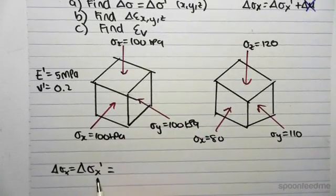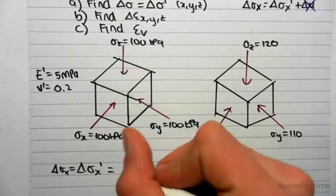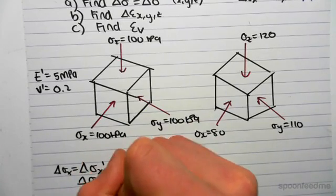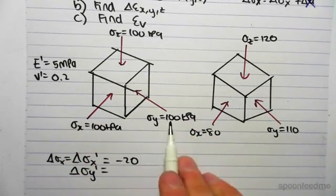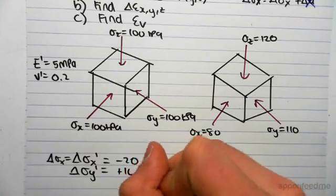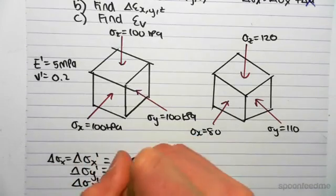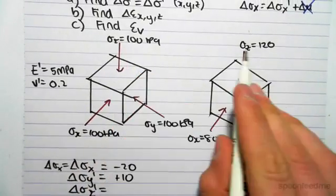So, the change in σx' - we've gone from 100 to 80, so this is -20. The change in σy' - we've gone from 100 to 110, so we've increased by 10. And the change in σz' - we've gone from 100 to 120, so we've increased by 20.